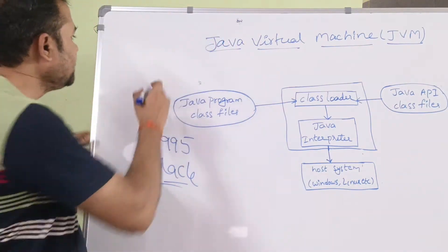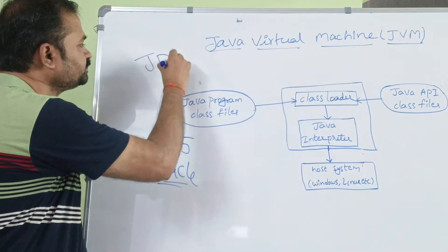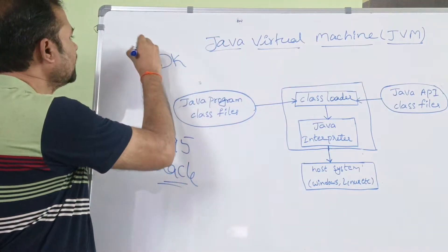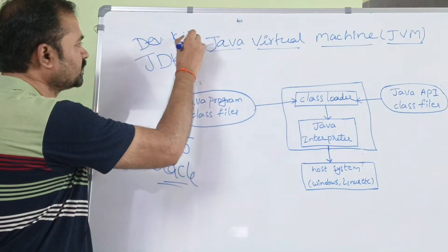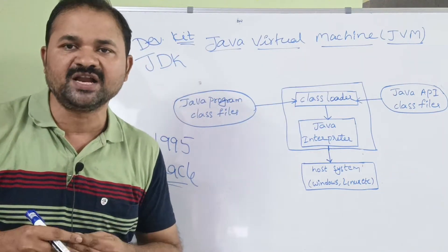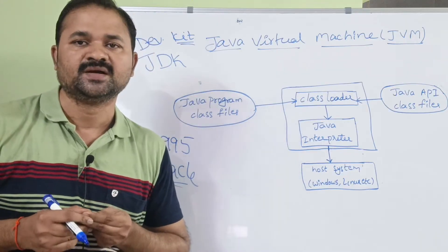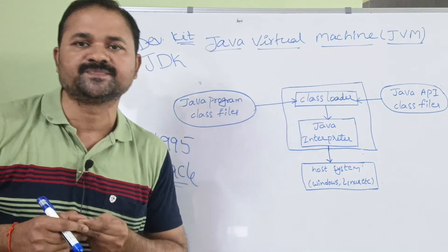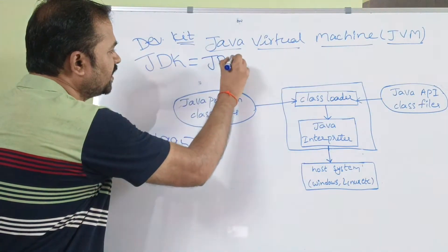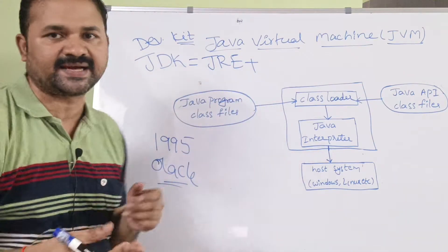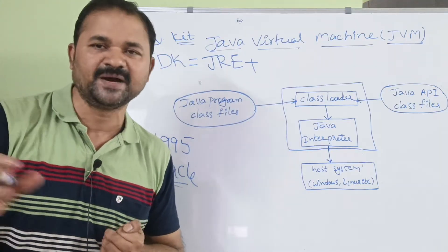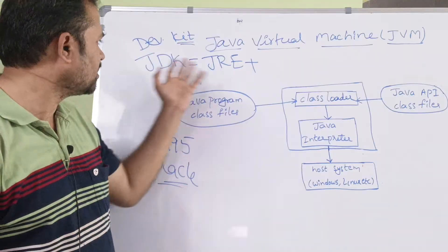Here we mainly have a software called JDK. JDK stands for Java Development Kit. JDK provides an environment to develop Java applications. JDK contains several tools such as JRE, and it also contains tools like Javac, the Java compiler, and Java, a debugger.